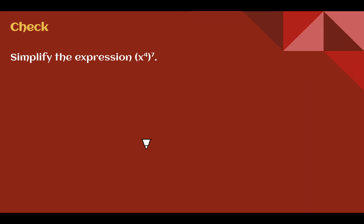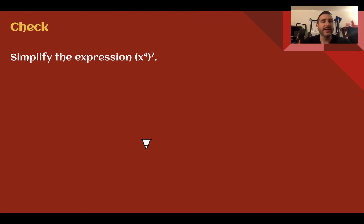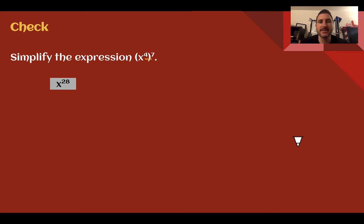Check your understanding: Simplify the given expression. Pause the video now and complete the check. You should have found x to the 28th. We just multiplied 4 and 7 — power to a power — giving x to the 28th power.